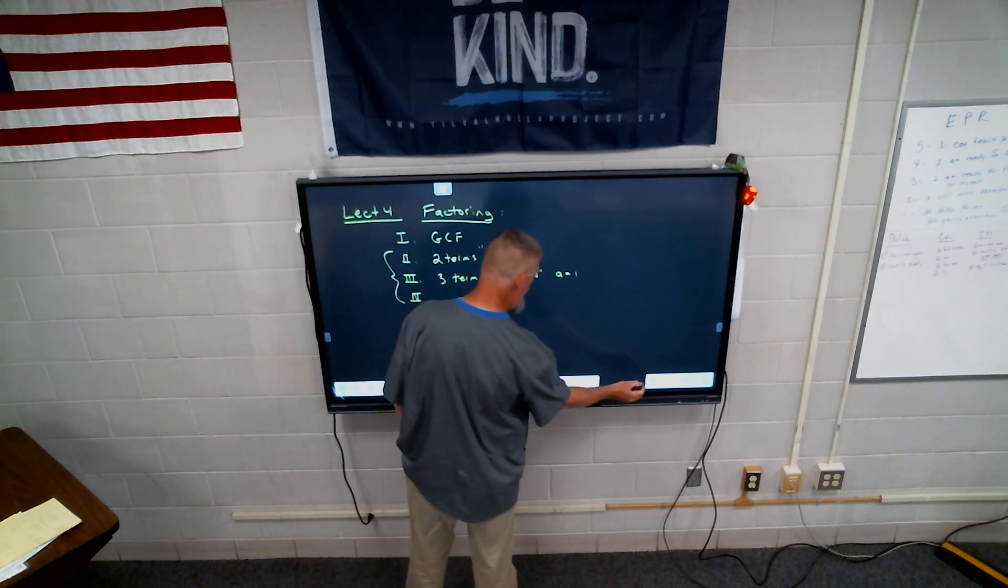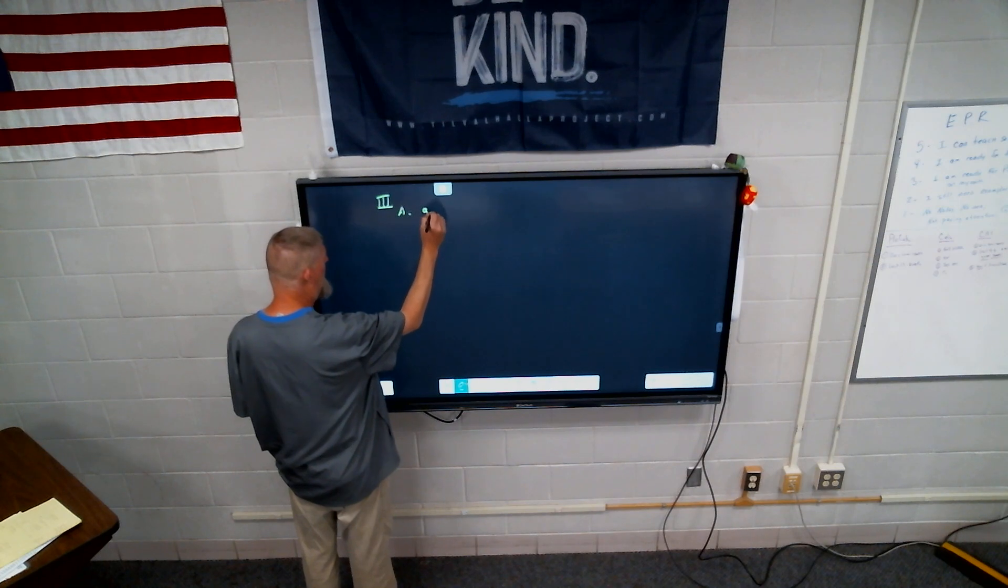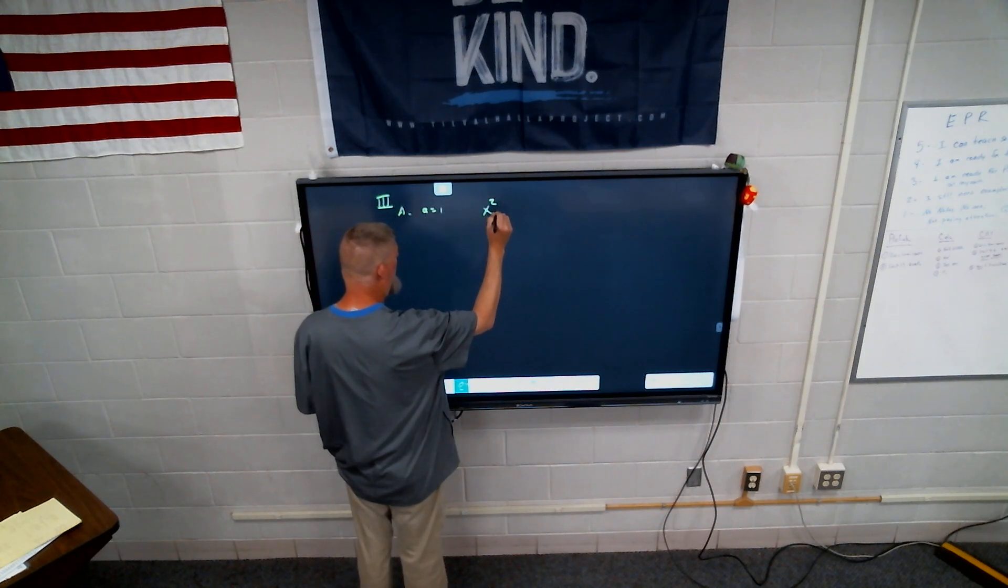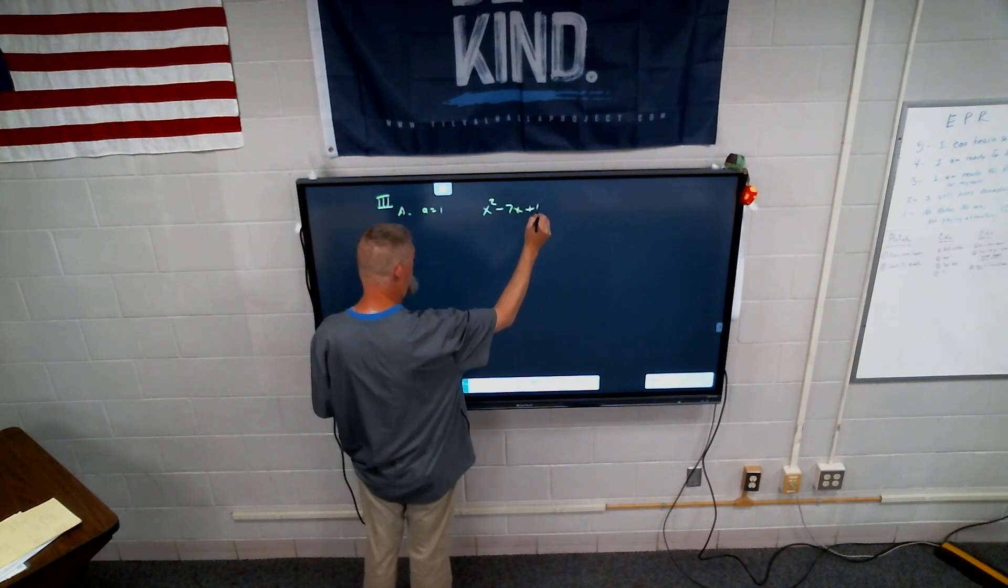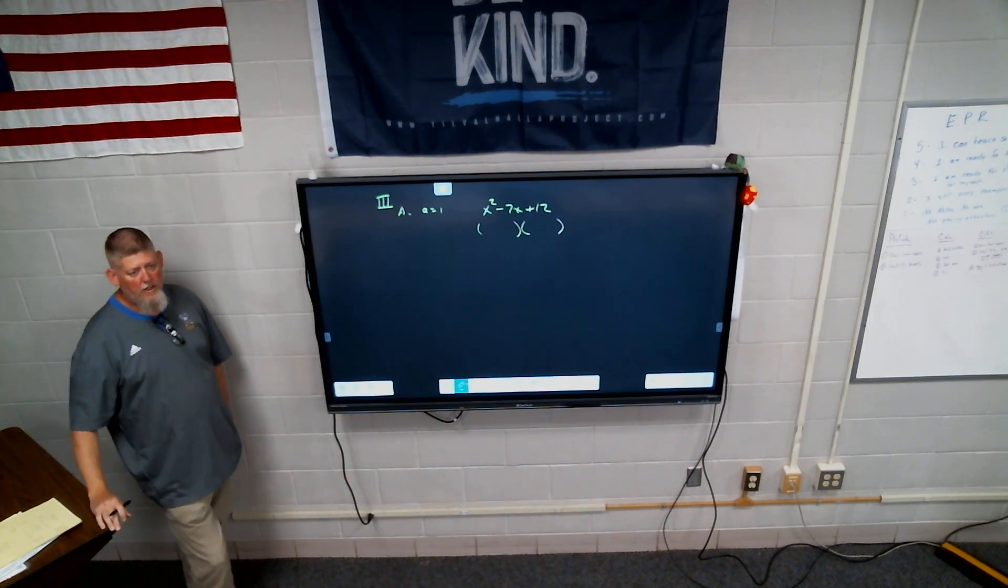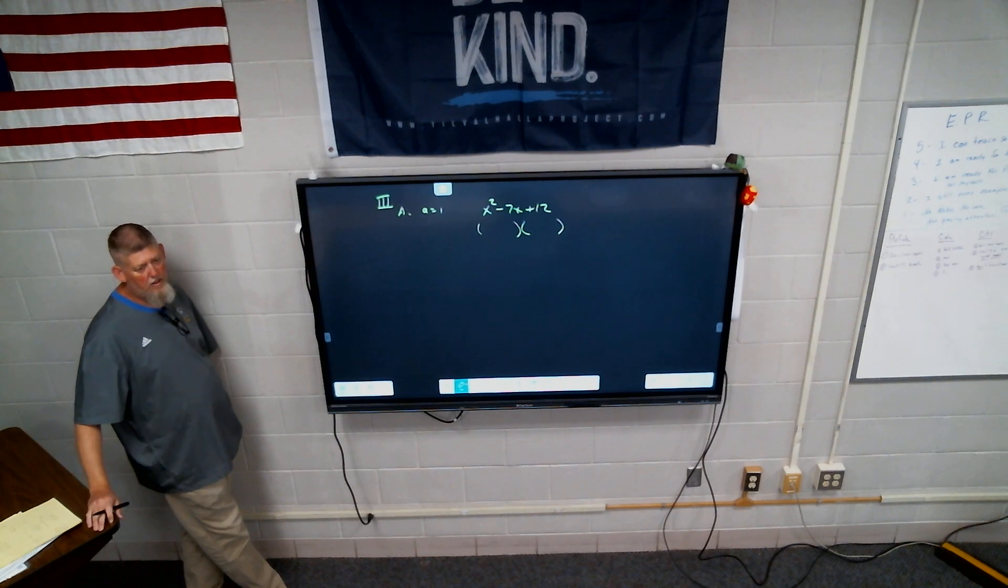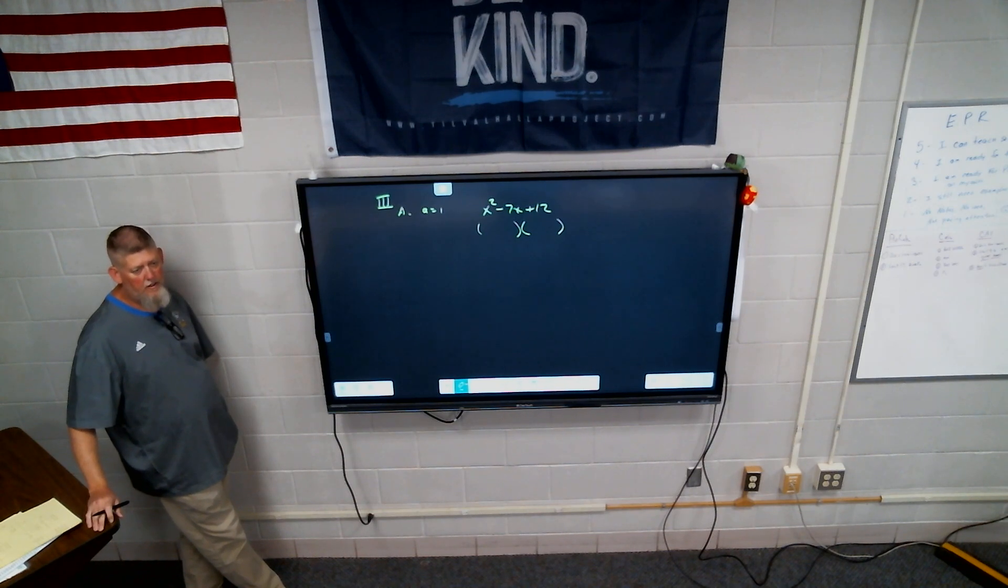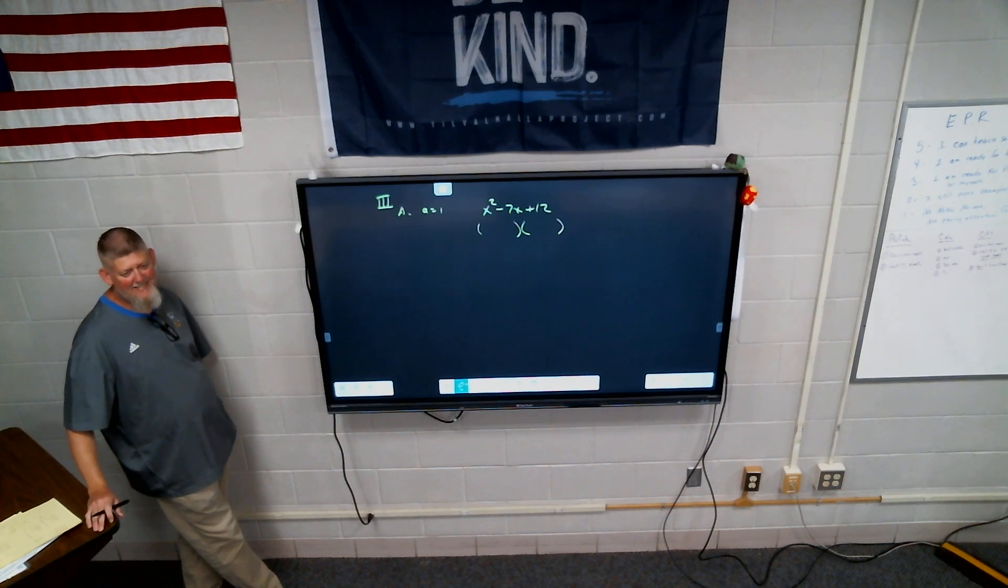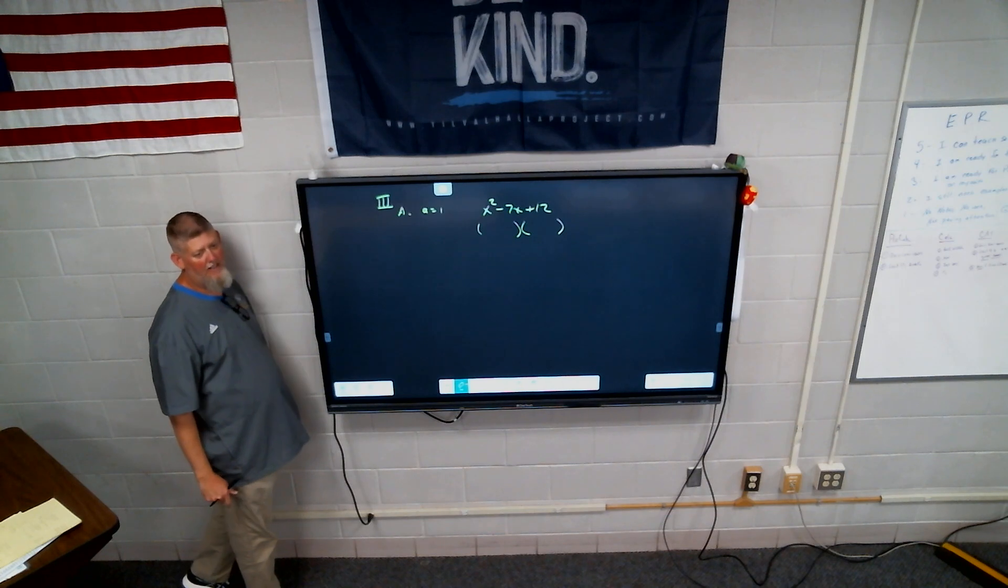So when we talked about trinomials, this would be Roman numeral three, a, when a equals one. Let's say I gave you something like x squared minus seven x plus twelve. In order to factor that down to its primes, what do I do? What process do I think through? You have to put the x's in there first. And then something would, it has to multiply to equal one thing and then add to equal the other. Very good.